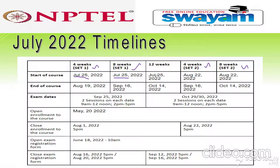The 12-week course also starts from July 25th. Set 2 four-week and eight-week courses start from August 22nd. Course end dates: four-week Set 1 ends August 19th, eight-week Set 1 ends September 16th, 12-week ends October 14th, four-week Set 2 ends September 16th, and eight-week Set 2 ends October 14th.